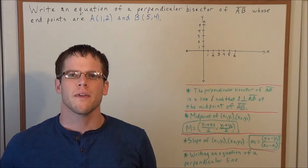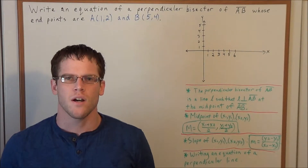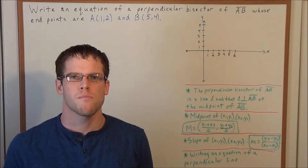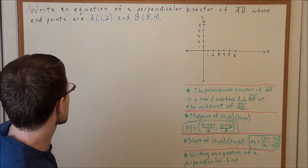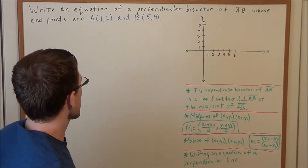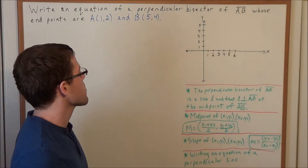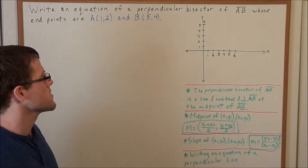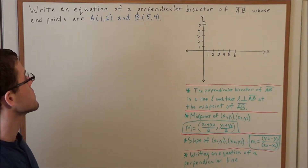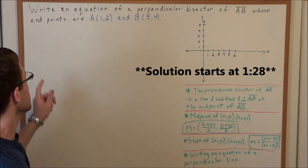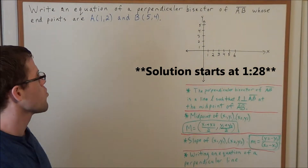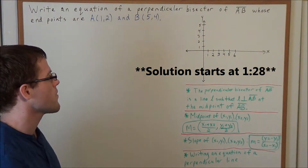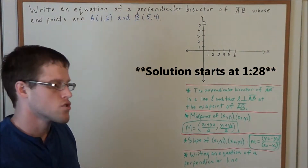Hello YouTube students, my name is Vincent and today I want to take a look at perpendicular bisectors. I want to look at the problem: find the equation of a perpendicular bisector of line segment AB whose endpoints are (1, 2) and (5, 4).